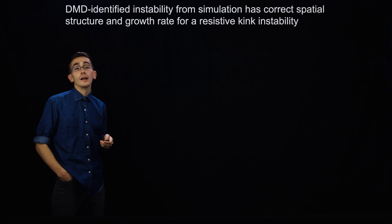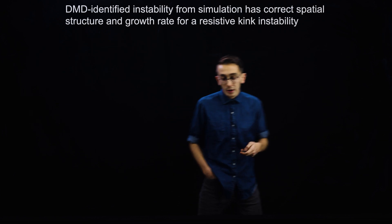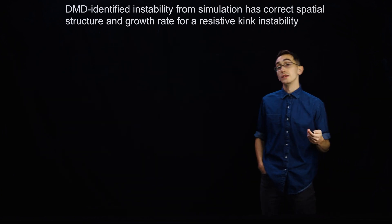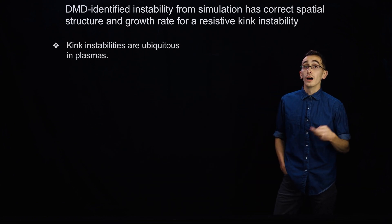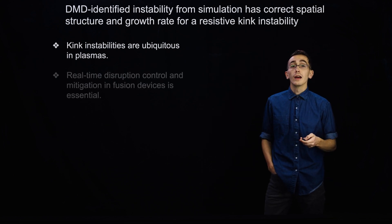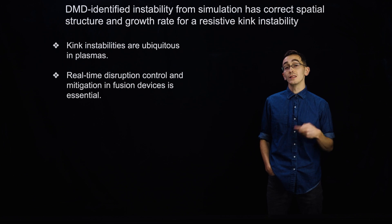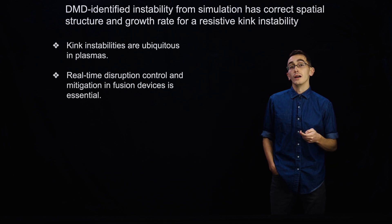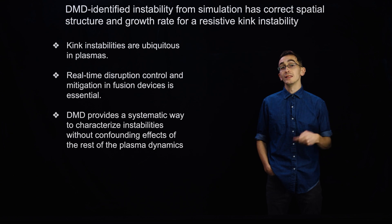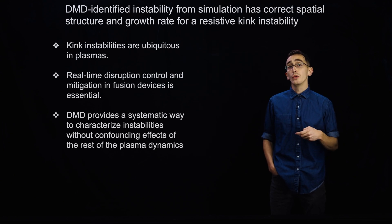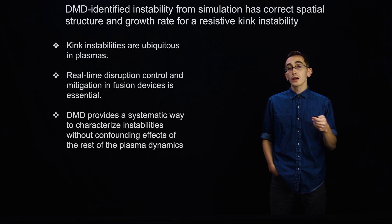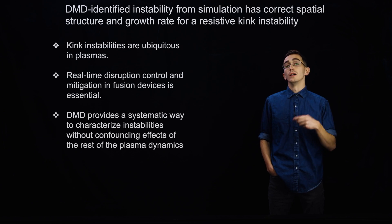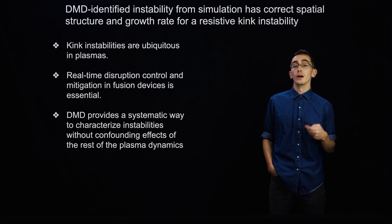The other major result is that we can identify an instability in these simulations consistent with a resistive kink instability, and we obtain the full spatiotemporal structure. This is important because kink instabilities are ubiquitous in plasmas, and real-time disruption control and mitigation in fusion devices is essential to avoid catastrophic loss of confinement. DMD provides a systematic way to characterize these instabilities without the confounding effects of the rest of the plasma dynamics, offering a possible route toward real-time control of kink instabilities in these machines.